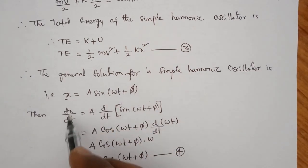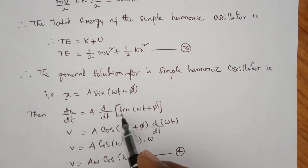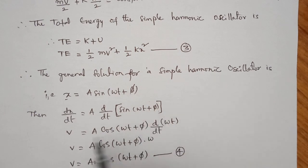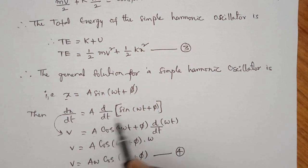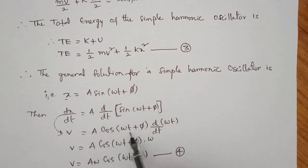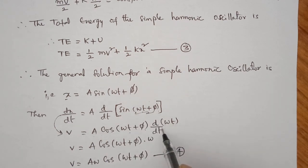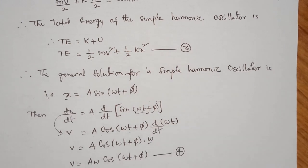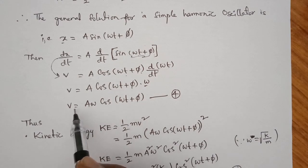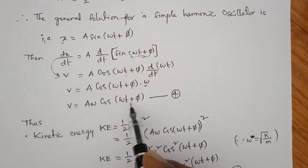Differentiating x: dx/dt equals A times the differentiation of sin of omega t plus phi, which equals A times cos of omega t plus phi, and then d/dt of omega t gives omega. So velocity v equals A omega cos of omega t plus phi. This is equation 4.